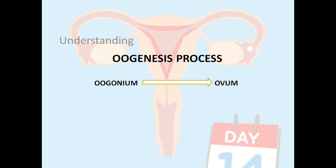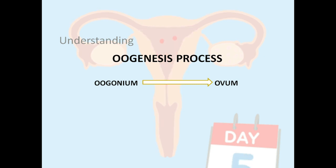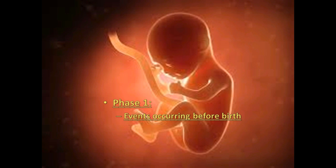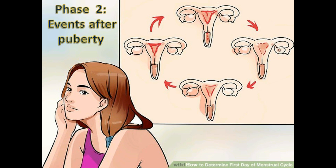Oogenesis can be defined as the process or journey of an oogonium to a mature ovum. It is a very complicated yet fascinating process. Oogenesis is divided into two phases: phase one starts before birth — yes, before birth, a baby girl already has millions of oocytes in her ovaries. Phase two starts at puberty when the ovaries become active again, meaning the period from birth to puberty is an inactive period with no major development.